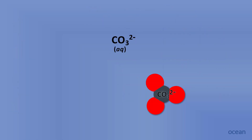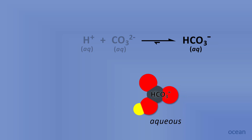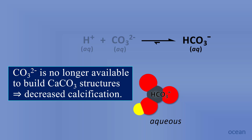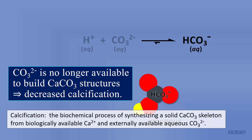Let's consider the aqueous carbonate ion. Carbonate is essential for sea creatures to build a calcium carbonate skeleton, and any dissolved carbonate in ocean water is available for these organisms to create their skeletal structures. But if the carbonate ion encounters a hydrogen ion, the result is hydrogen carbonate — aqueous hydrogen bonds to carbonate. This is extremely important because it means that carbonate, CO₃²⁻, is no longer available to build calcium carbonate structures. In other words, there is a decrease in calcification. Calcification is the biochemical process of synthesizing a solid calcium carbonate skeleton from biologically available calcium ions and externally available aqueous carbonate ions. If carbonate ions are converted to hydrogen carbonate, they are not usable to create a calcium carbonate skeleton, and so there is decreased calcification.